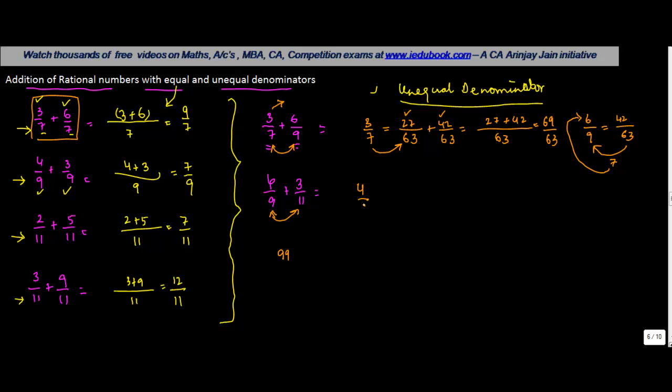4/9 into a rational number which has the denominator equal to 99. 9 has to be multiplied by 11 to get 99, so we multiply this 4 with 11 to get 44 over here.